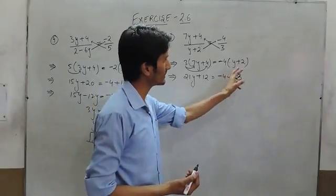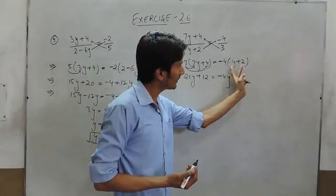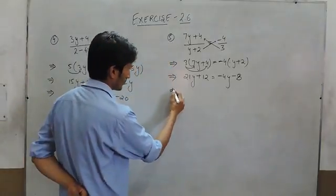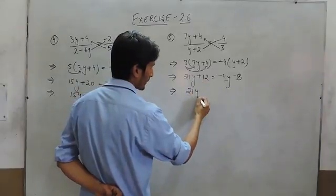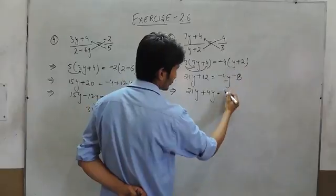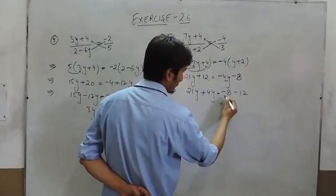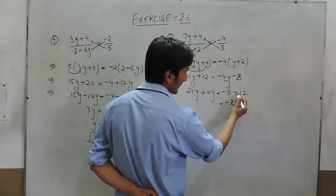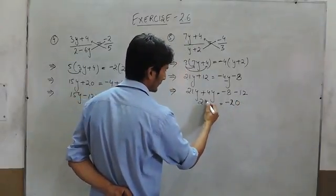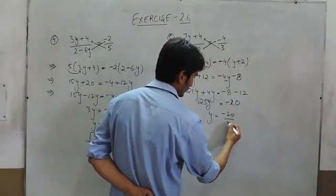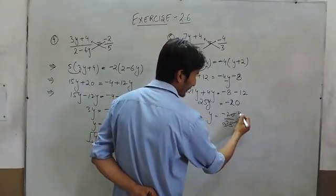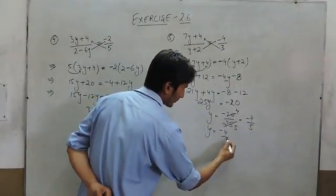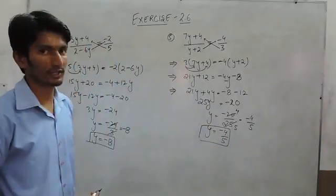We can simply learn it as: when there is a negative sign outside the bracket, the signs of all the terms inside the bracket are to be changed. So this when shifted to this side is positive 4y, and this is shifted to that side is negative 4y. Negative negative is positive, so this is 20. The sign will be negative because the greater value has a negative sign, and this is 25y. So y will be equal to — after cancelling, this is 4 times and 5 times — so y is 4 upon 5. The value of y for this particular expression is 4 upon 5. Thank you.